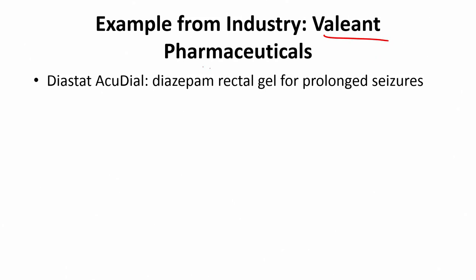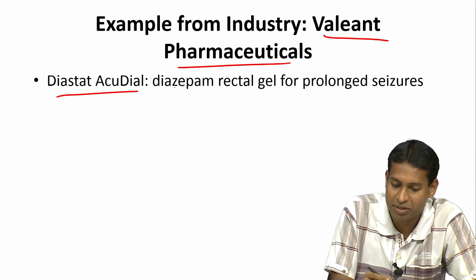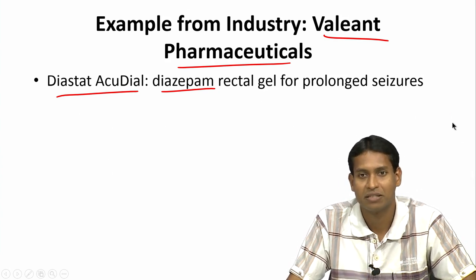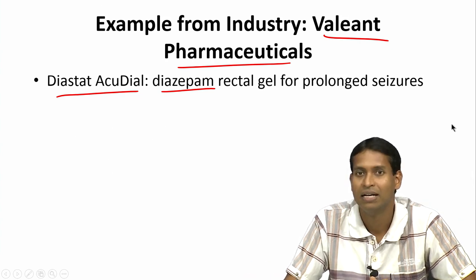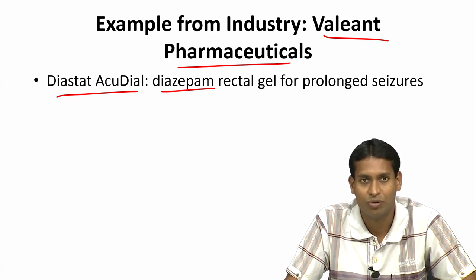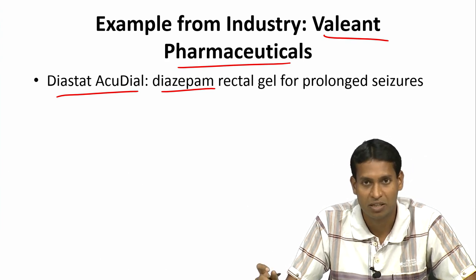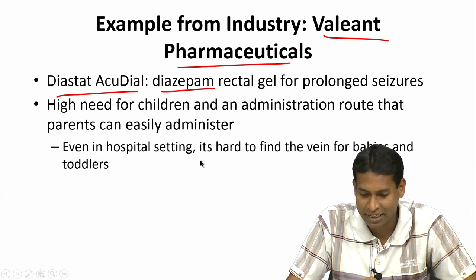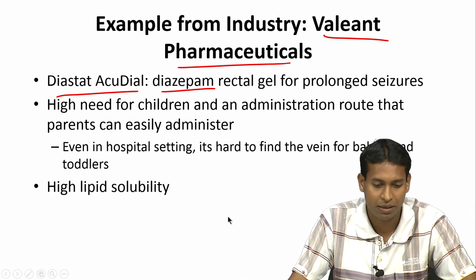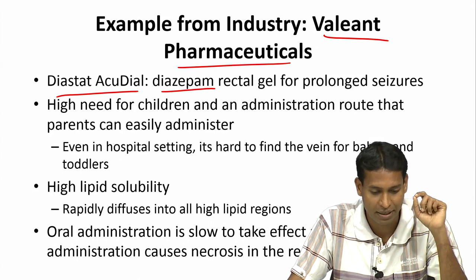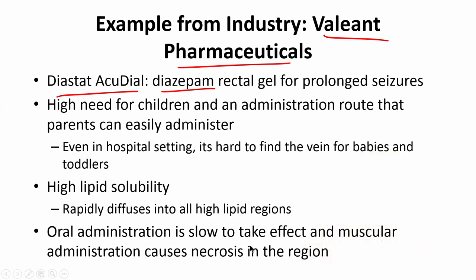An example from Valiant Pharmaceuticals is called Diastat, a rectal gel that delivers diazepam to prevent seizures. If somebody is suffering from seizures a caretaker can administer this — the patient is incapacitated, cannot eat anything or put anything in the buccal cavity, and if the attendant is not well trained or does not have access to injections, they can just use the suppository. This is particularly suited for children: parents can easily administer it, and it is hard to find IV access in babies and toddlers. Diazepam has high lipid solubility so it rapidly diffuses into lipid-rich regions. Oral administration is slow to take effect, and with babies you do not want to inject into muscles too much as it may cause necrosis and prevent development.